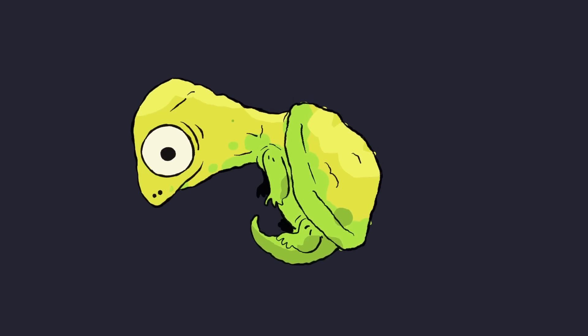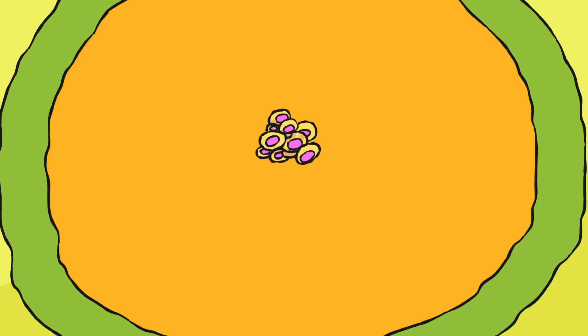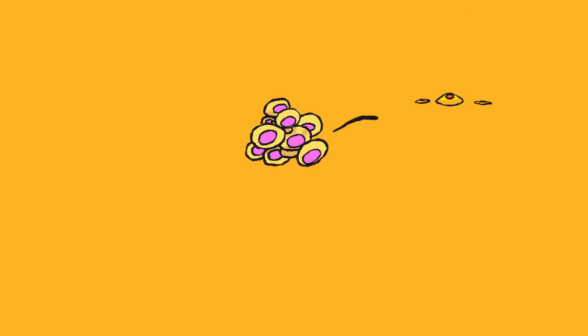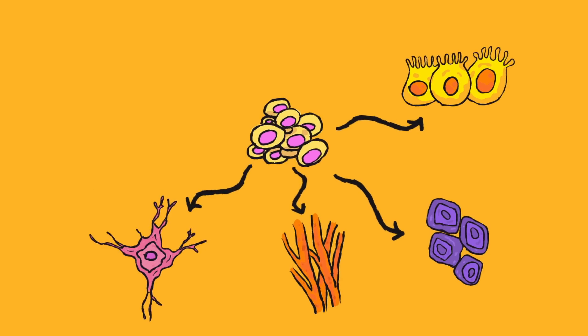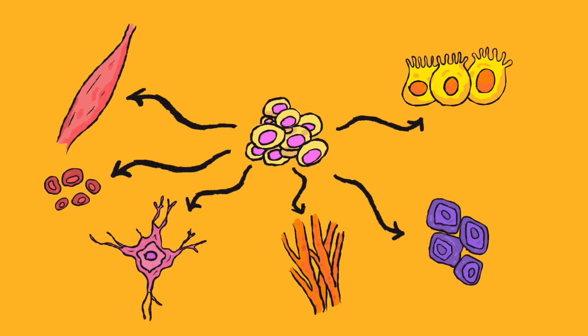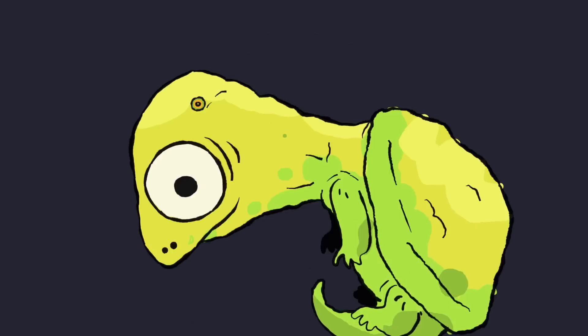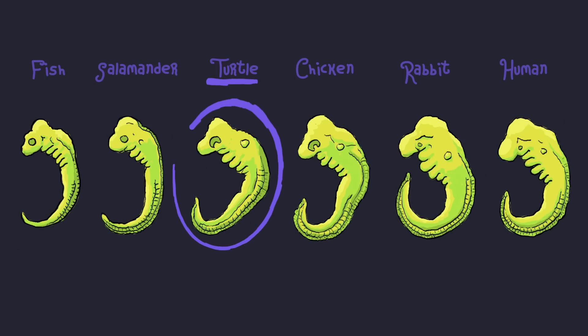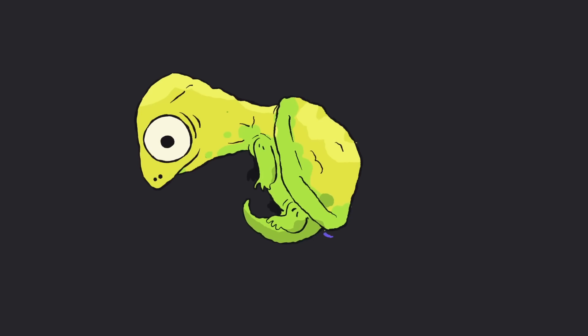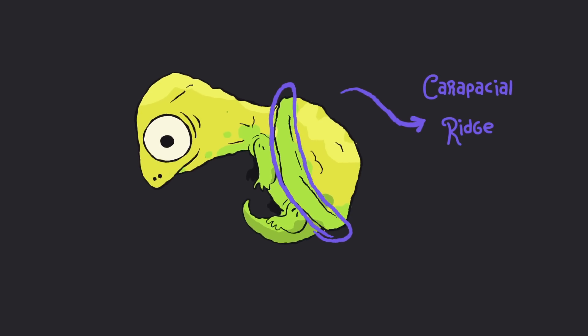Like other embryos, turtle embryos are made of undifferentiated cells that become specific cell types and then organs and tissues through gene activity and communication between cells. At first, turtle embryos look very similar to those of other reptiles, birds, and mammals, except for a bulge of cells called the carapaceal ridge.